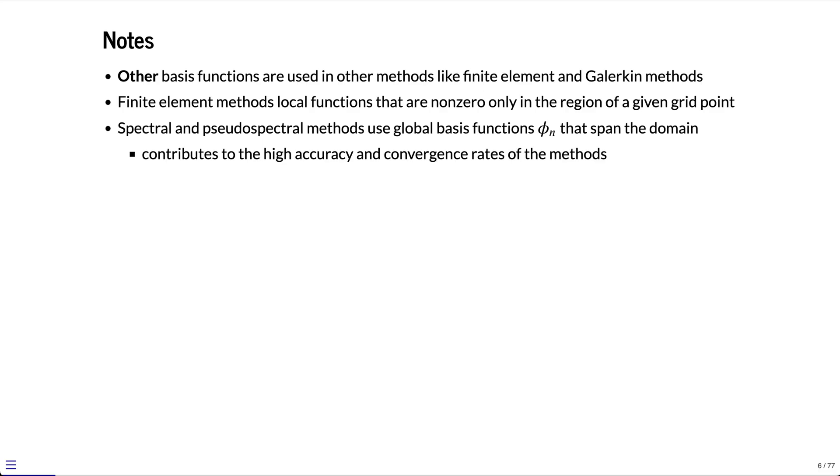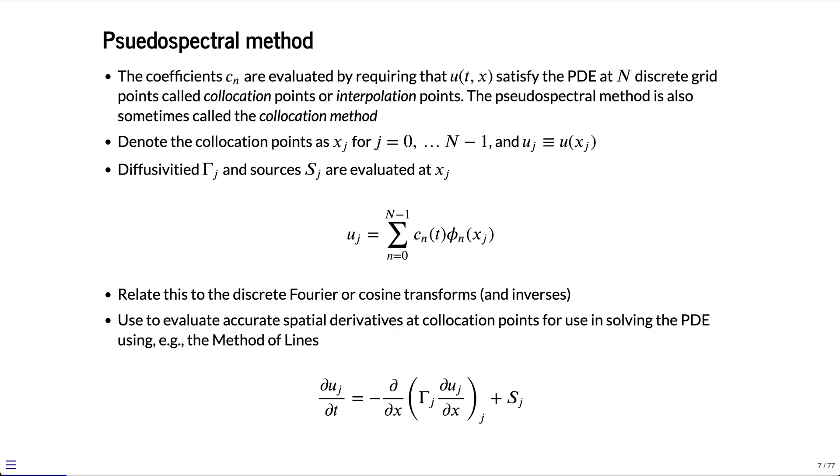This contributes to the high accuracy and the high convergence rates of these methods. These are the ones that we'll focus on here. This results in exponential convergence rate with the number of terms and also gives us perfect accuracy when we evaluate derivatives subject to the truncation of the series. That's in stark contrast to finite difference methods, and we'll compare finite difference methods to spectral methods in some of the examples.